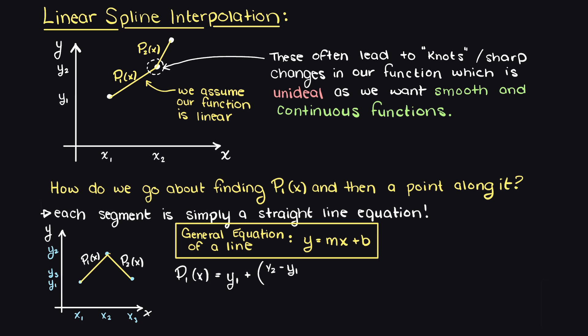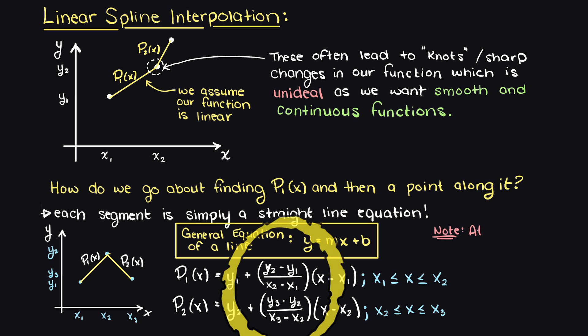Therefore, we can say that any general linear spline interpolation between two points can be written as the following, which is simply the equation of a straight line where this term here is simply our slope, m.